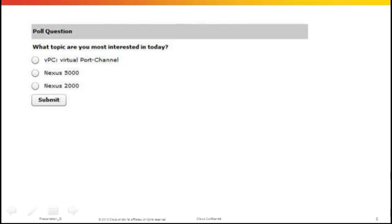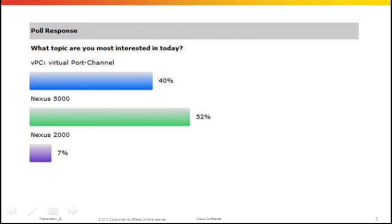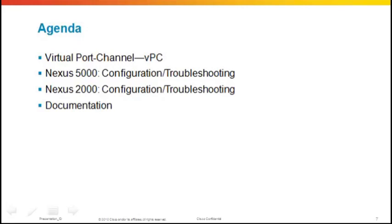We'll kick things off with a polling question: What topic are you most interested in today? VPC or Virtual Port Channels? The Nexus 5000? Or the Nexus 2000? Looking at the results: Nexus 5000 with VPC right behind it. Now I'd like to hand the mic over to Lucien, who will provide insight on Nexus switches.